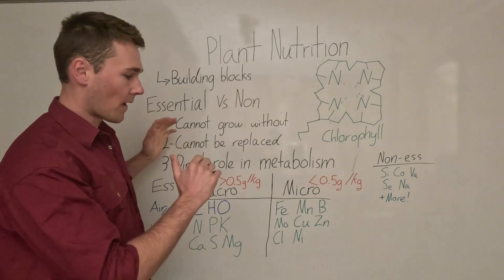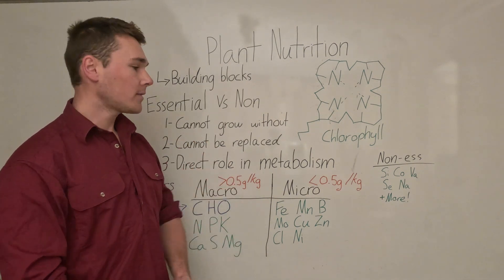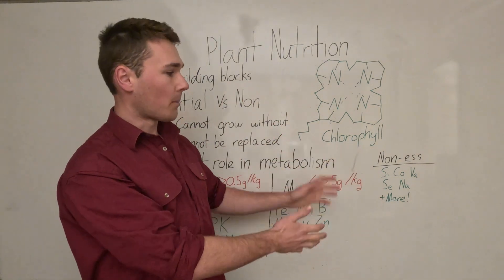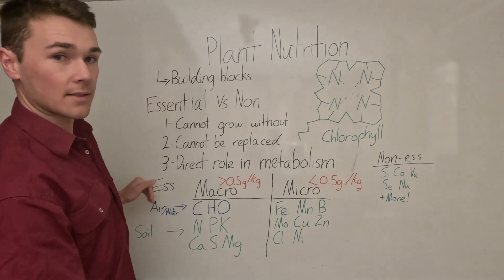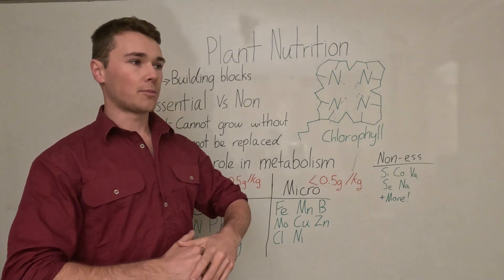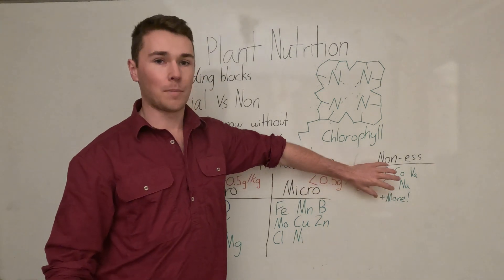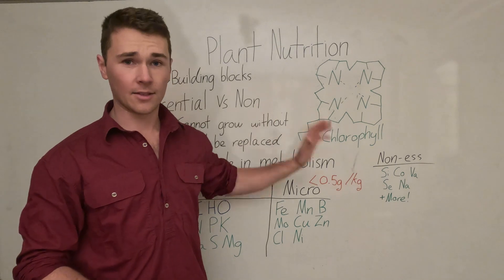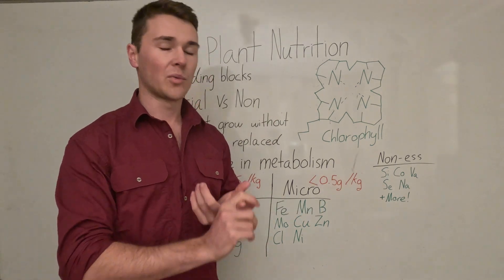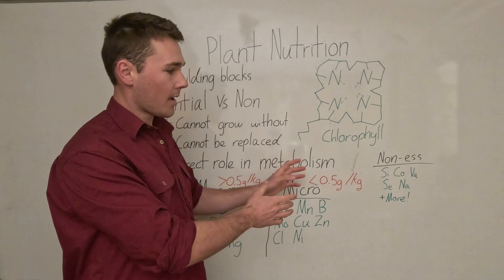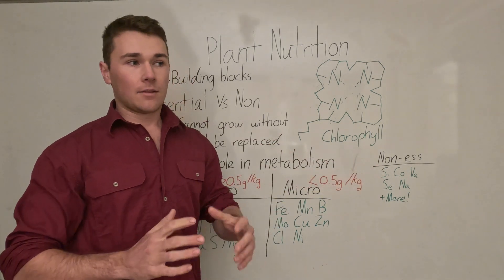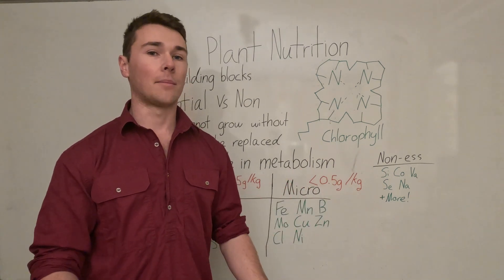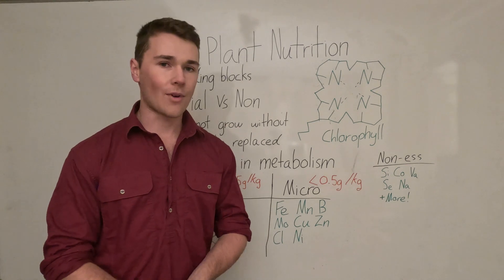We'll be going into the function of each of these nutrients in future videos. Finally we have our non-essential nutrients. These are very important for our plant but they're not required necessarily. The plant can still produce a good yield without it, but it'll produce even better yield with this. There's heaps of different non-essential nutrients. It's important to remember that almost every single nutrient in our periodic table will probably be used at some point.